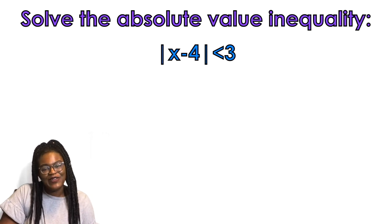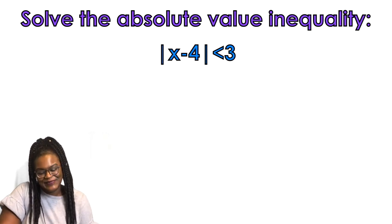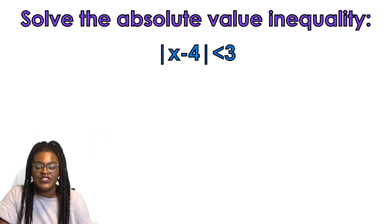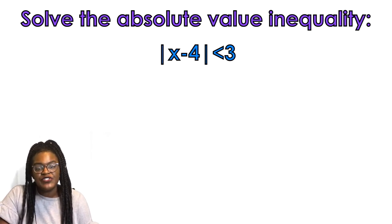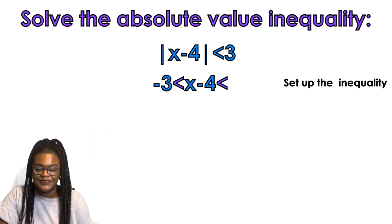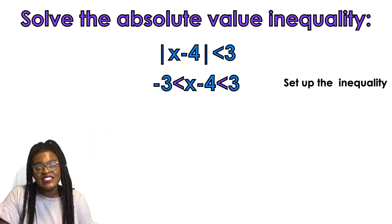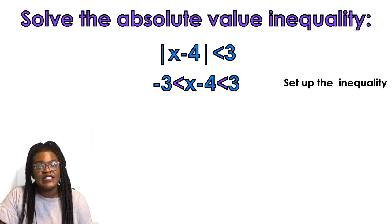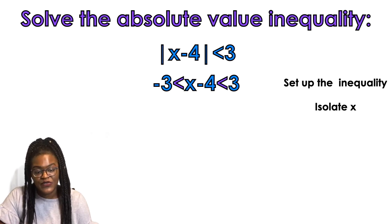Solve the absolute value inequality. I have the absolute value of x minus four is less than three. You always want to make sure that your absolute value is isolated — in this case, it is. So because it's less than three, we're going to set up the inequality as an and. So I have: negative three is less than x minus four is less than three.